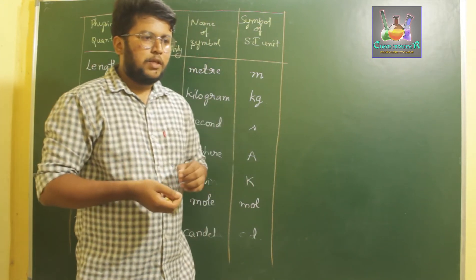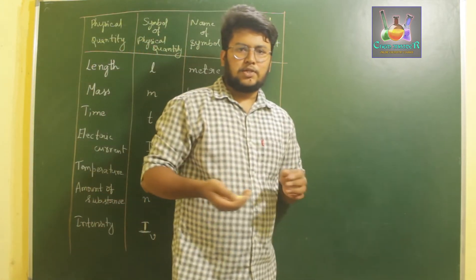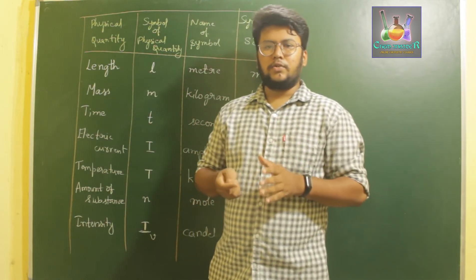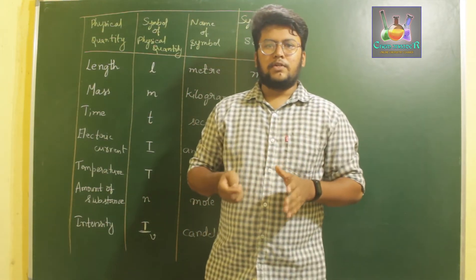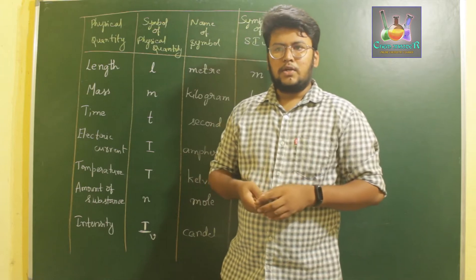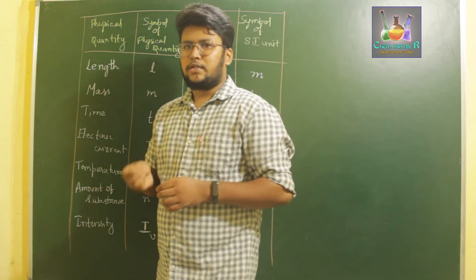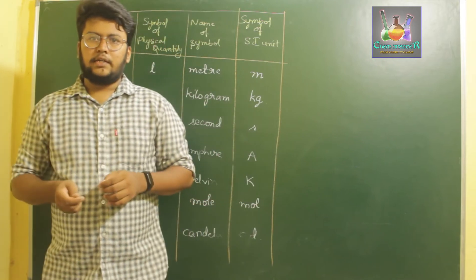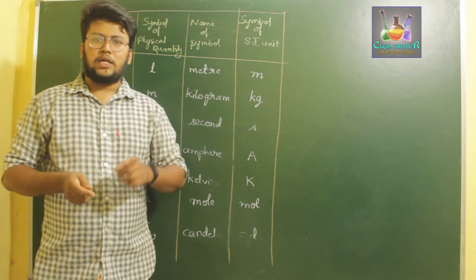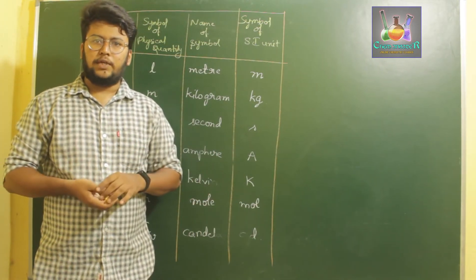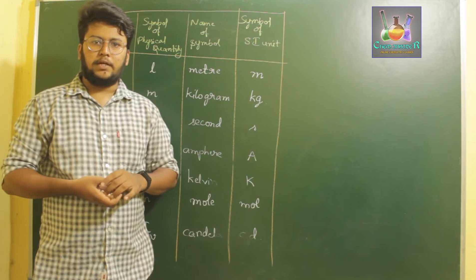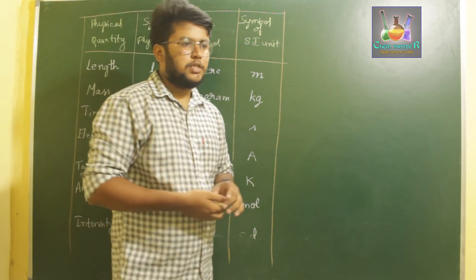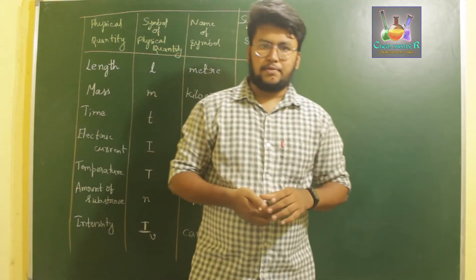Therefore, the union of chemistry decided to establish one single unit system usable all over the world. In the 11th General Conference of Weights and Measures, it was decided that the world should use a single metric system called the SI system — the International System of Units and Measures.